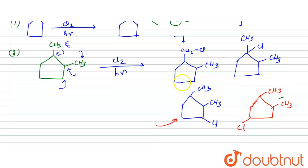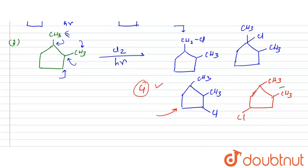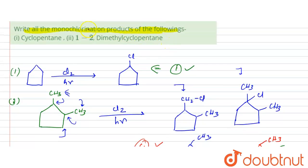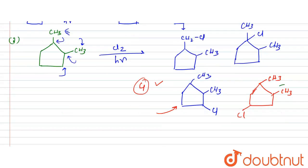Now in total how many products you are getting? You are getting 4 products, so here you are getting 4 products and here we have got 1 product. So these are the total number of possible products in the given 2 compounds with the monochlorination. I hope you have understood, thank you very much.